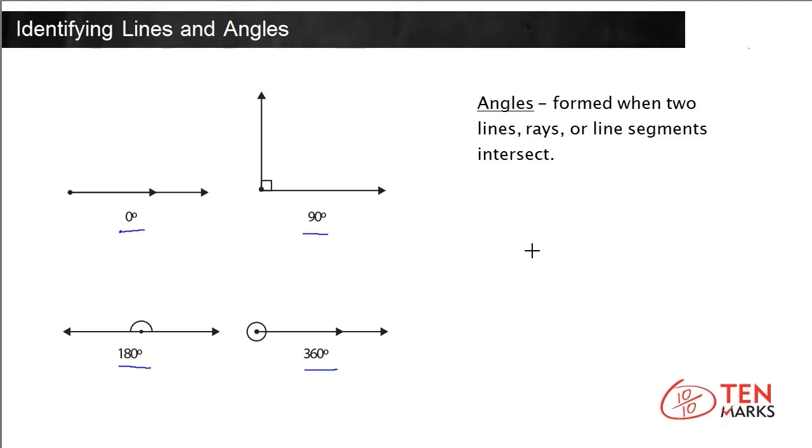Let's take a closer look. If I were to draw a ray going in one direction with an endpoint here and another ray on top of it, when the rays go in the same direction, they form a 0-degree angle. When I bring the ray up to make perpendicular rays, it forms a 90-degree angle.